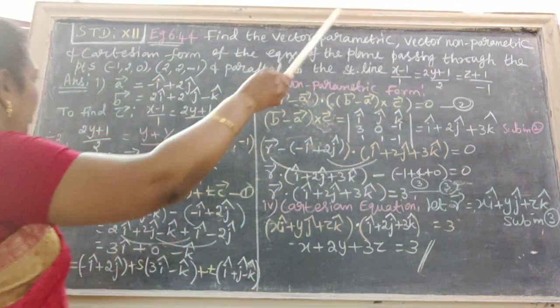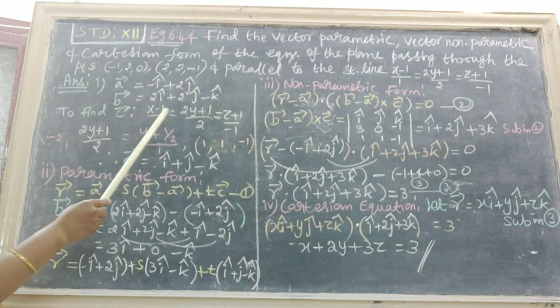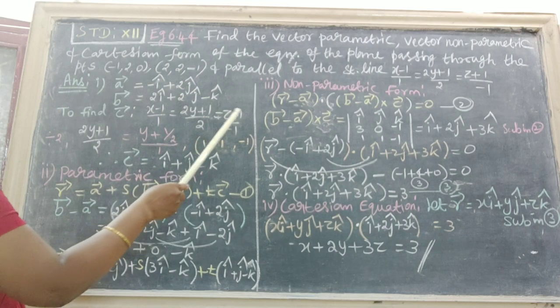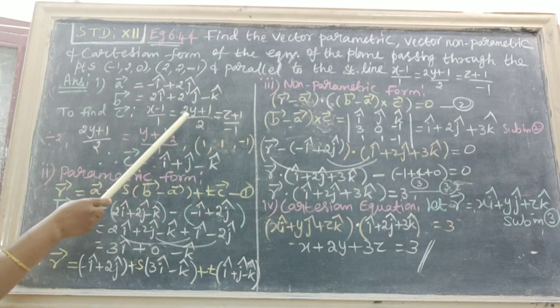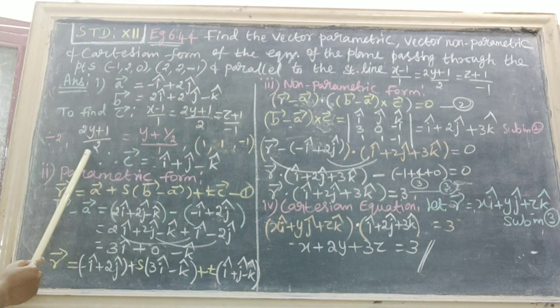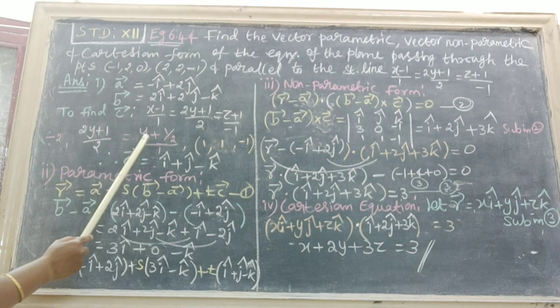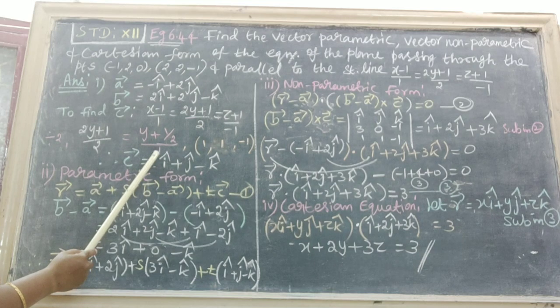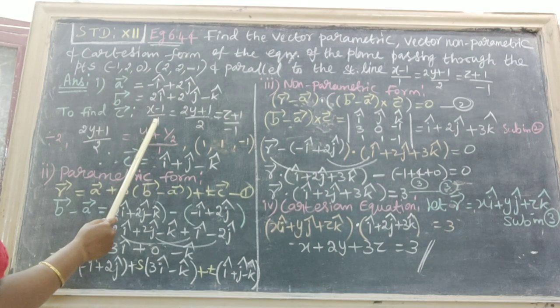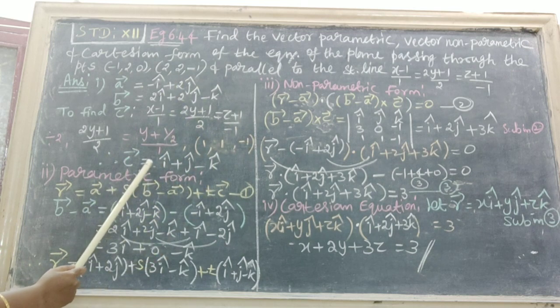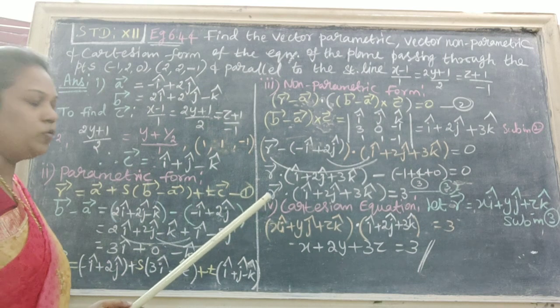Here the straight line, write down the straight line equation. Then x-1 by 1 is correct form, z+1 by -1 is correct form. Therefore, take (2y+1)/2 and divide by 2, both numerator and denominator. Therefore, we get the answer this. Therefore, the point is here 1. Therefore, at final, we get (1, 1, -1). Therefore, c vector equal to i cap + j cap - k cap.